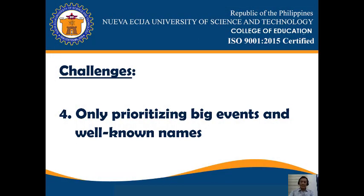Number four challenge: only prioritizing big events and well-known names. The stigma surrounding social studies and history in particular is that it's all about memorization, critical dates, key locations, and important figures. This generalization often results in students viewing the subject as irrelevant and impersonal, when in fact the skills developed in social studies classrooms give students the ability to navigate today's most pressing, engaging, and challenging issues, particularly during this time of pandemic.